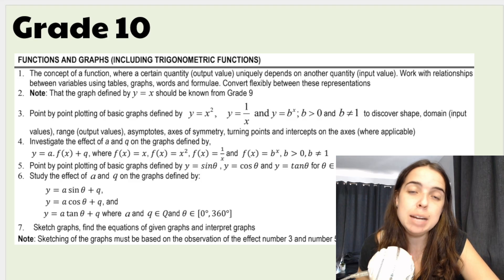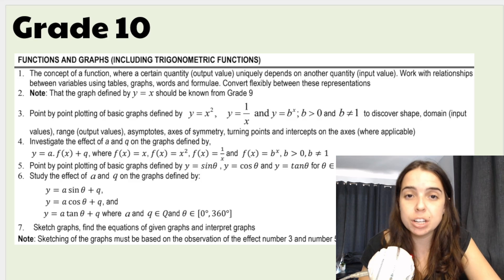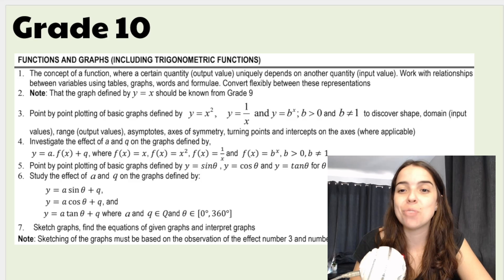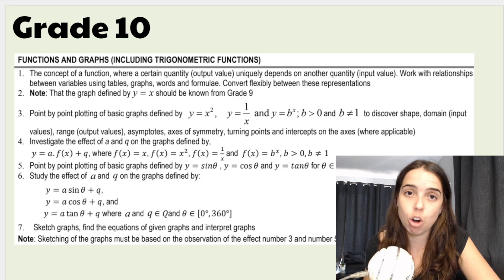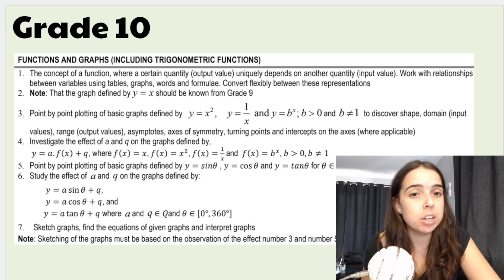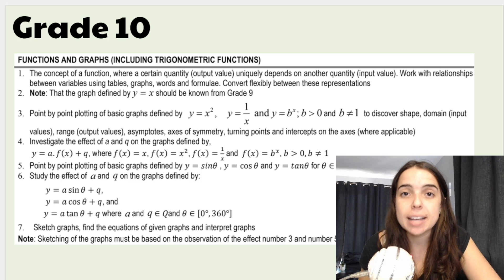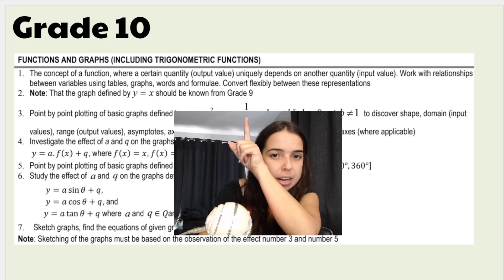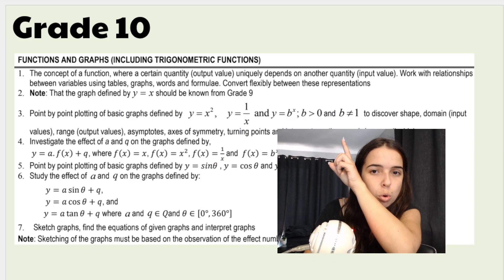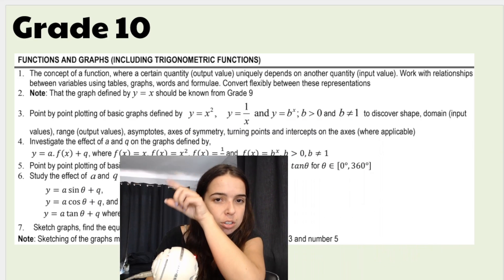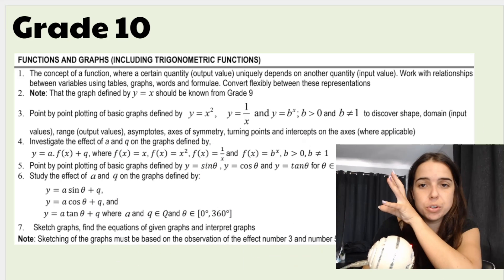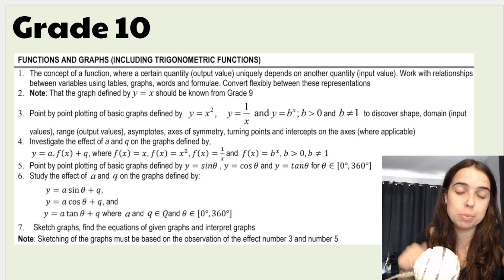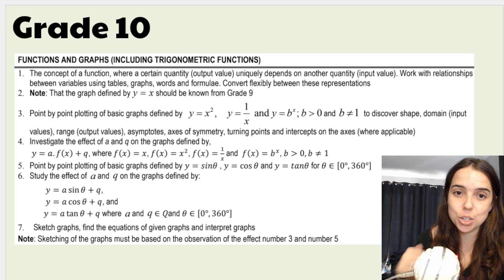Then our next big topic is functions and graphs, including trigonometric functions. You have done functions in the past — you would have done a linear function or straight line graph in grade 9, represented by y = mx + c, where m is the gradient and c is the y-intercept. The ATP notes that y = x should be known from grade 9. Here are the additional functions you will be doing in grade 10, as well as things you need to know regarding domain, range, and all of those things. I have started a video playlist on these functions, which I'll link below, and I'll be adding to that playlist this year.